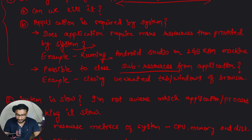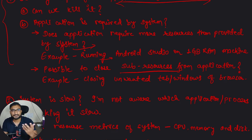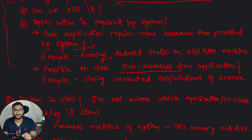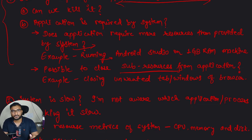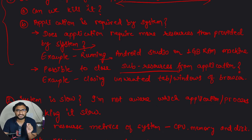Another option is to close some sub-resources within the application. For example, if you are running Chrome with hundreds of tabs and multiple windows open, closing some of them reduces memory consumption, since all running processes reside in memory. This can help optimize resource usage and improve the processing time of your machine.